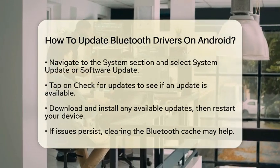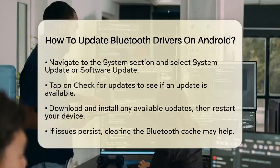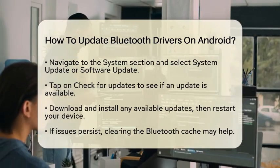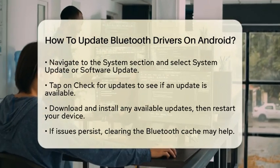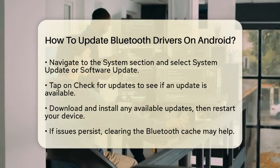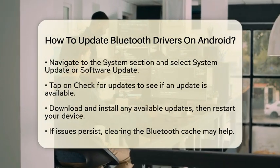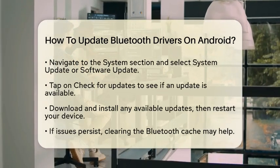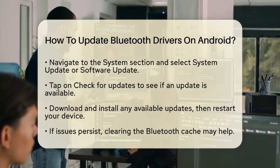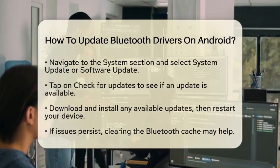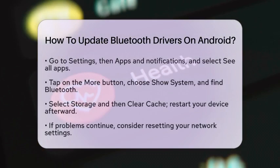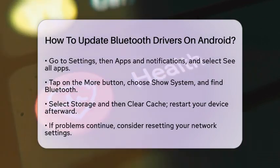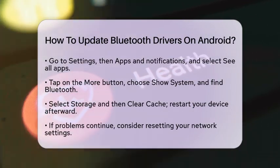Sometimes, even with updated drivers, you may still face connectivity issues. In such cases, clearing the Bluetooth cache can help. To do this, go back to Settings and select Apps and Notifications. Tap on See All Apps, then look for the More button and choose Show System. Find Bluetooth in the list, tap on it, and then select Storage. Here, you will see the option to clear cache. After clearing the cache, restart your device again.